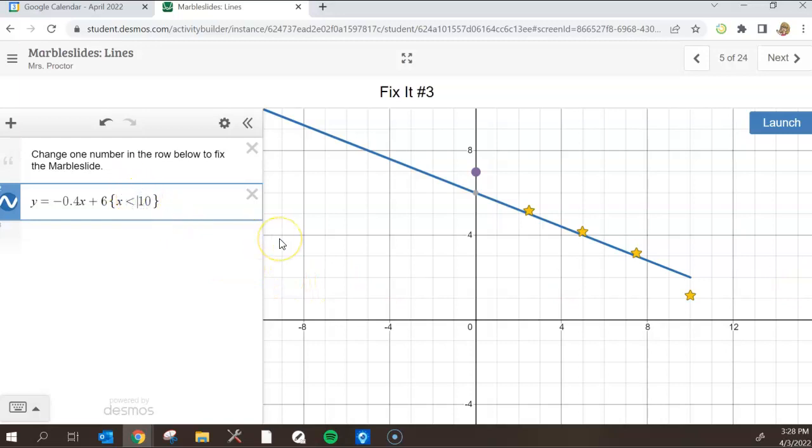Also notice what happens if I change this less than symbol to a greater than symbol. Notice that now we're showing all of the x values that are greater than the value 10. We're not showing any of them that are less than that, only the ones that are greater.